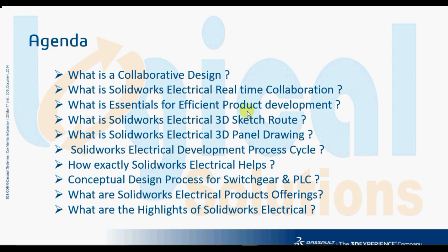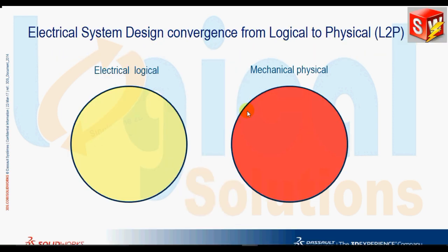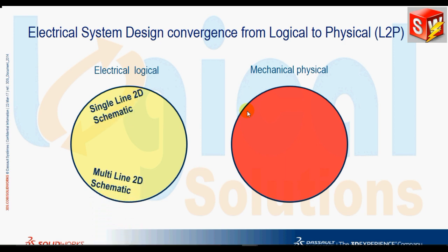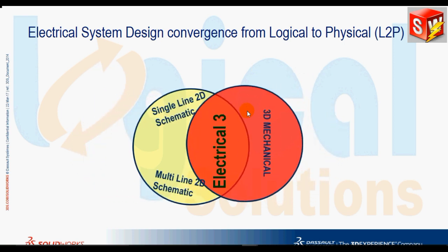First, we will discuss how collaborative design makes both electrical and mechanical engineers more productive through improvement to shared data, improved communication, and automation. The SOLIDWORKS database is a complete formation of data which is combinedly extracted from electrical, mechanical, and operations. Real-time collaboration is an integration of 2D and 3D electrical design.